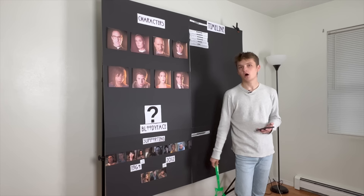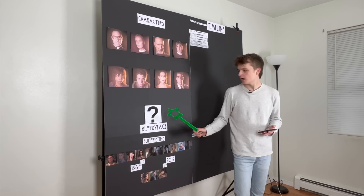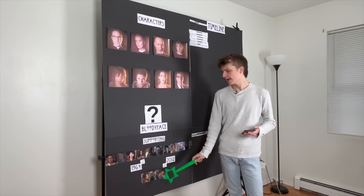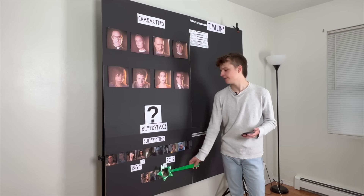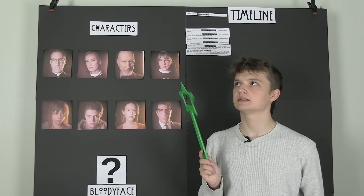Episode three opens with Adam and his wife getting killed by a copycat Bloody Face killer. There are like three or four Bloody Faces running around in the present day in 2012, and one of the copycat killers is the one that kills Leo and Teresa in the opening scene of episode three. Day 19, November 13th, 1964.